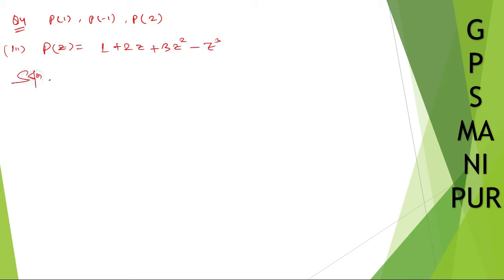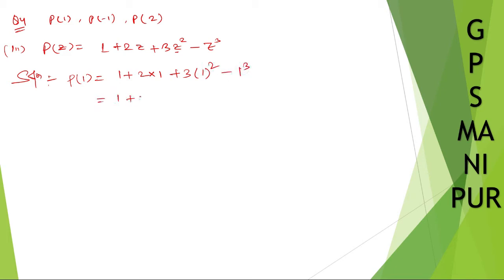Solution: we need to find p of 1. So p of 1 will be 1 plus 2 into 1 plus 3 into 1 squared minus 1 cubed — instead of z you are putting 1. That gives 1 plus 2 plus 3 minus 1. So 2 plus 1 is 3, 3 plus 3 is 6, 6 minus 1 is 5. This is your answer.